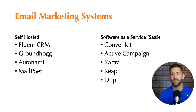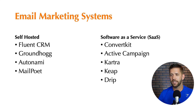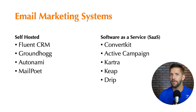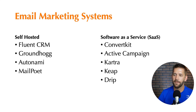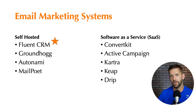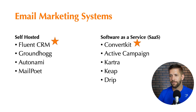Quickly, let's talk about email marketing. On the self-hosted side, you've got FluentCRM — I'm currently using it and have a review coming out soon — as well as Groundhogg, Autonami, and MailPoet. The self-hosted side for email marketing is still relatively new and getting there. On the SaaS side, you've got bigger, more well-known names like ConvertKit, ActiveCampaign, Kartra for that all-in-one, Keap, and Drip. I'm really enjoying FluentCRM personally, and on the SaaS side we've used ConvertKit for years and it's been a fantastic platform.